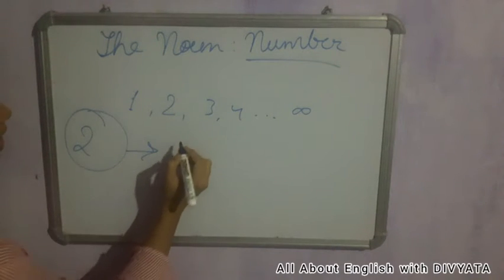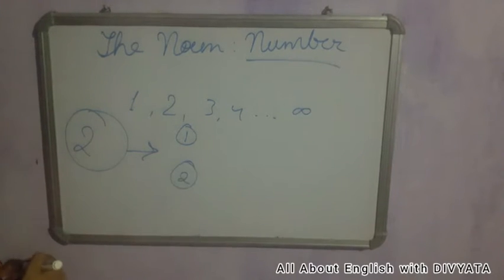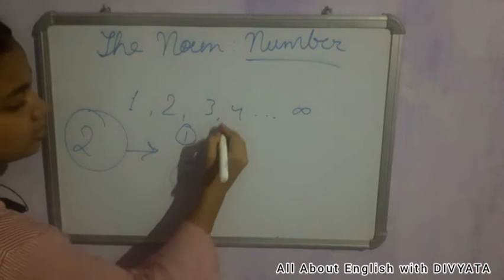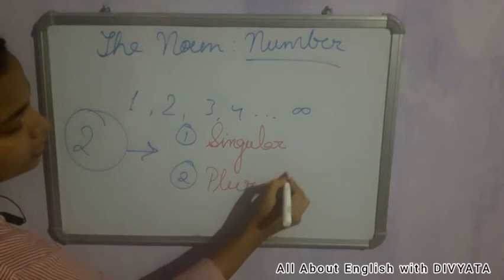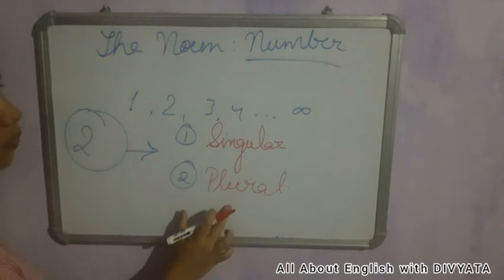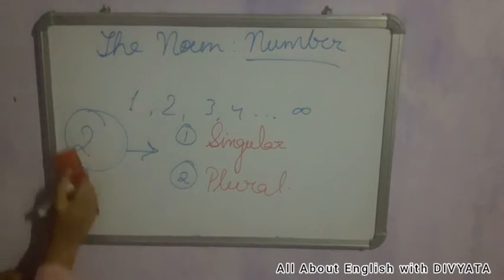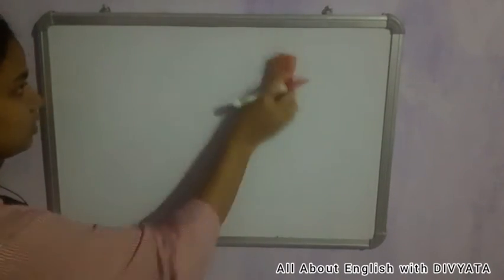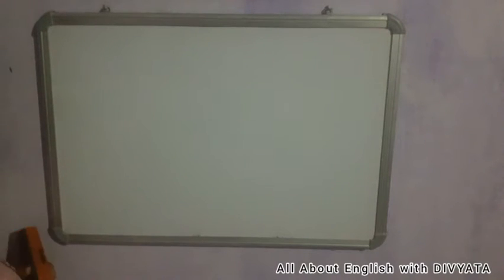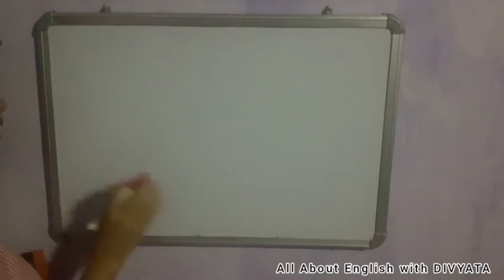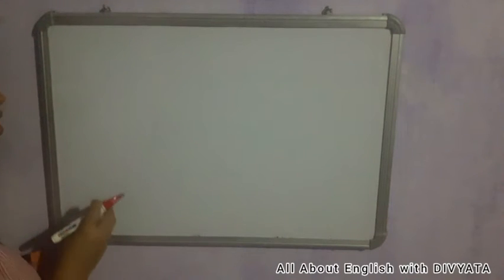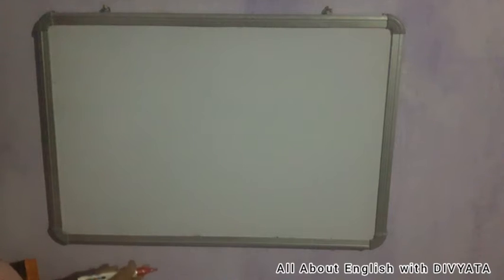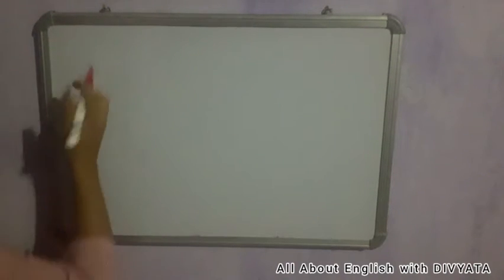The two types of numbers in English are: number one, singular nouns, and number two, plural nouns. Now let's see what singular and plural nouns are. But first, let's revise — what is a noun? A noun is the name of a person, place, animal, or thing. We have different kinds: common noun, proper noun, abstract noun, collective noun, uncountable noun, and so on.